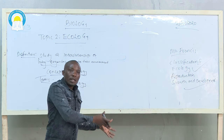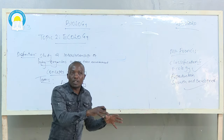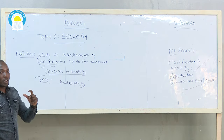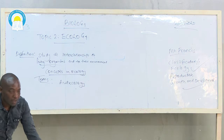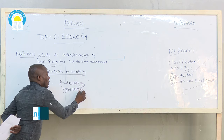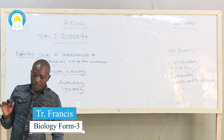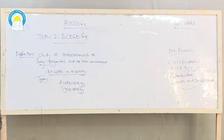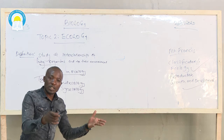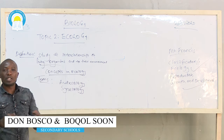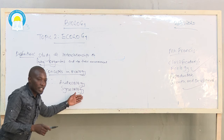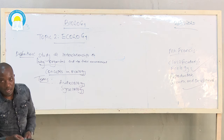For example, you are in an ecosystem like Lake Victoria and you are studying the Nile Perch — that is the study of a single species in an ecosystem. The second concept is synecology: the study of many species in an ecosystem. For example, take a lake or a pond — you are going to study crops, fish, and aquatic plants — the study of many species interacting with each other in an ecosystem.